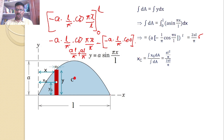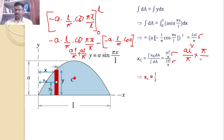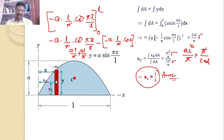The x-coordinate of the centroid xc = ∫xg·dA / ∫dA = (al²/π) / (2al/π). Simplifying, π cancels with π, a·l cancels with a·l, giving xc = l/2. This is the x-coordinate answer for the given diagram.